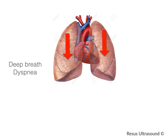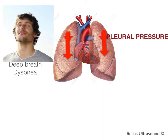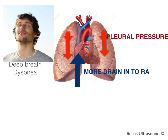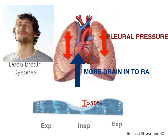Pitfall three: when the patient takes a very deep breath or has dyspnea with increased inspiratory effort, pleural pressure decreases much more than with a normal breath. This causes more IVC drainage into the RA and the IVC collapses far more than during normal breathing. If the patient is breathing very aggressively or sniffing, do not interpret solely based on IVC — rely on other parameters such as cardiac function or lab markers.